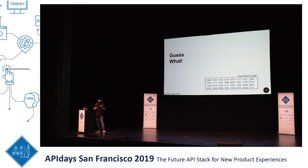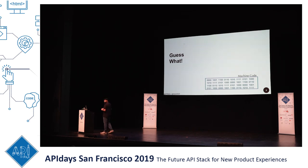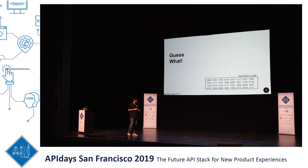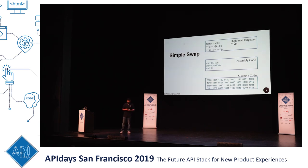I don't expect anyone here to be familiar with machine code, but in case there is some ancient developer here, can you guess which function or method this machine code is depicting? Who said hello world? No, that's not hello world. This function is a simple swap function. You can see the assembly code as well as high-level language code for the same function.